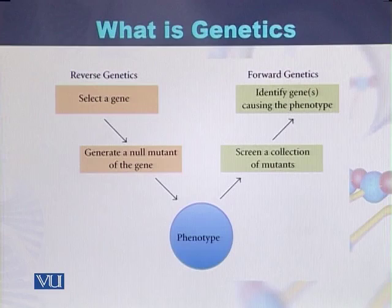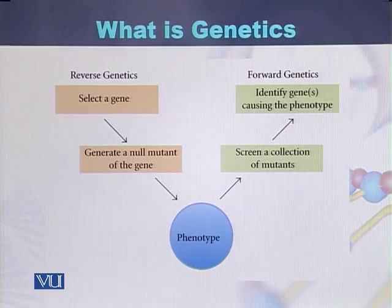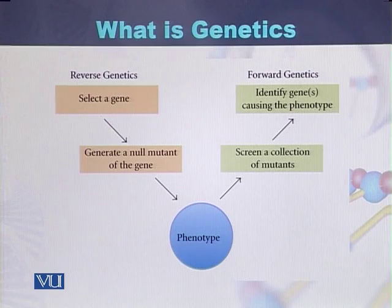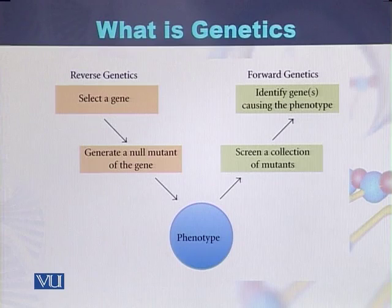Genetics can be studied in two different ways. One way is called reverse genetics while the second method is called forward genetics. In reverse genetics, a researcher or geneticist selects a particular gene, then certain mutations are created in that gene, and then the phenotype is identified based on those mutations. This methodology is called reverse genetics.